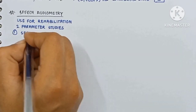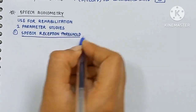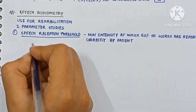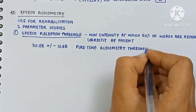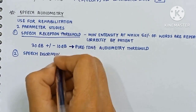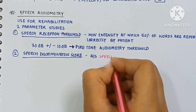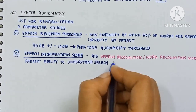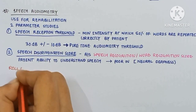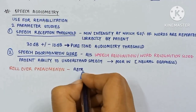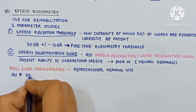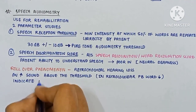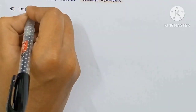Now the speech audiometry. This is used for rehabilitation. Two parameters are studied. First is the speech reception threshold — the minimum intensity at which 50 percent of sounds are repeated correctly by the patient, which is 30 dB plus or minus 10 dB of pure tone audiometric results. Second is the speech discrimination score, also known as the speech recognition or word recognition score — the patient's ability to understand speech. This is poor in neural deafness. The rollover phenomenon occurs in retrocochlear hearing loss: on increasing the sound above the threshold, the PB word score decreases, which is indicative of neural deafness.